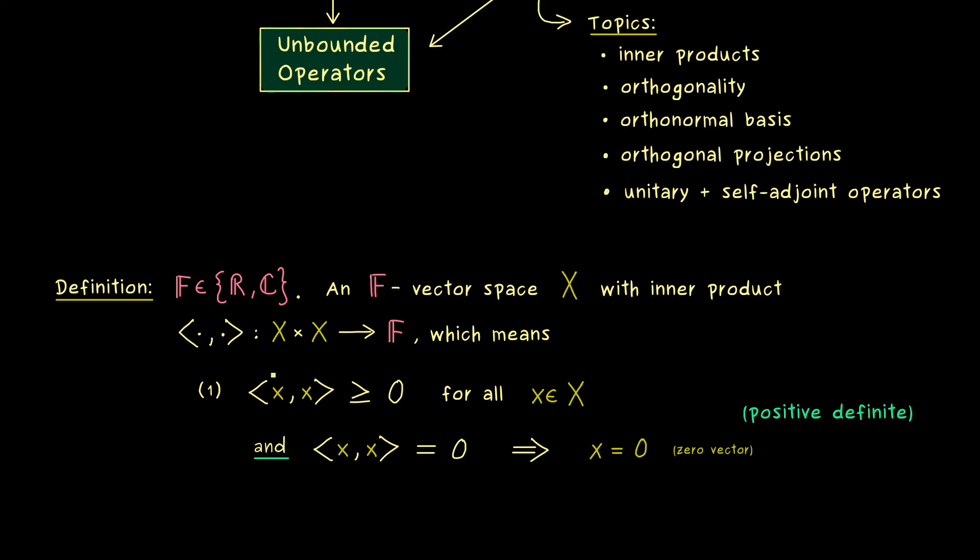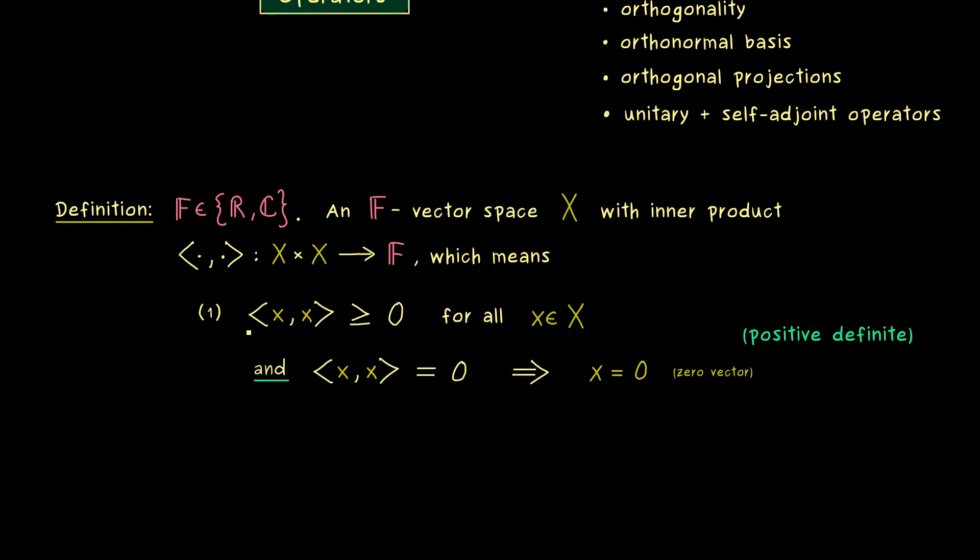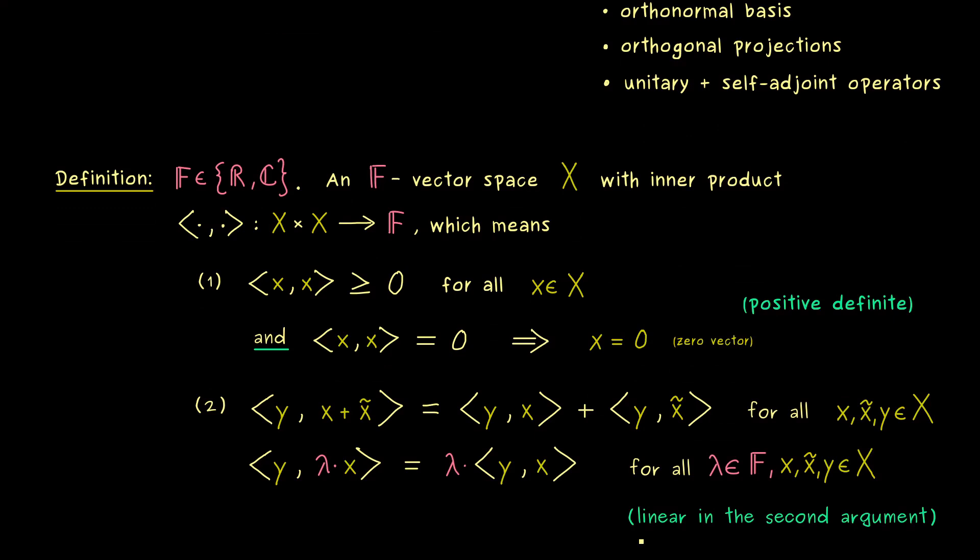The second property tells us that we have linearity in the inner product. We will formulate it such that we have linearity in the second argument. Linearity means two things. First we can pull out the addition from the second argument, and we can pull out a scalar from the second argument. You should see the first argument is always fixed with a vector y, and the things only happen in the second argument.